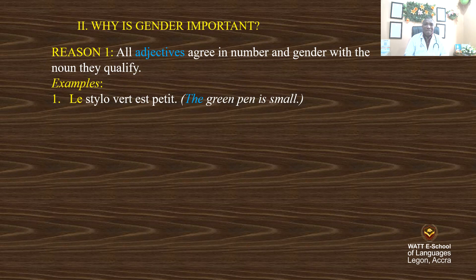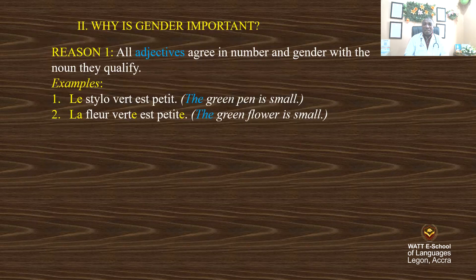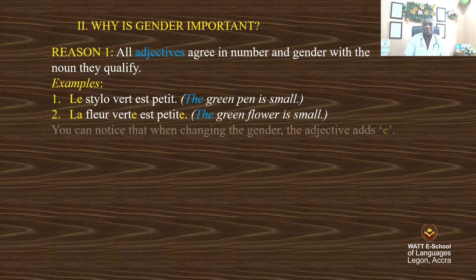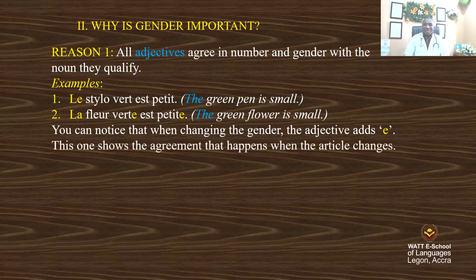In English, 'the green pen is small' and 'the green flower is small' — small and green remain the same, they don't change. In French, they will change because they have gender. Stylo is masculine gender, fleur is feminine gender. When stylo is masculine, the adjective of color 'vert' and the adjective 'petit' change their form. So we have 'le stylo vert' and 'la fleur verte'. When changing the gender, the adjective adds E.